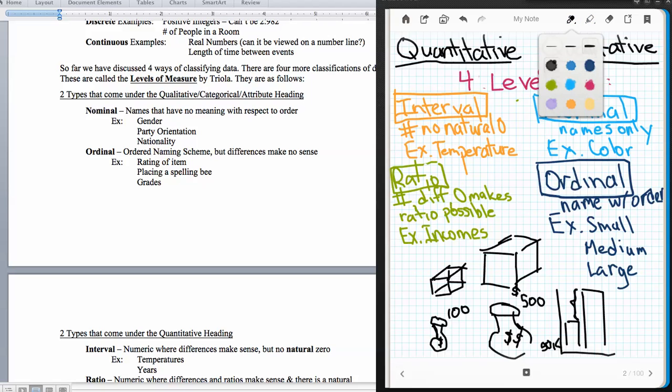Another name for categorical or qualitative is attribute. Once we have the fact that we do have these 4 levels of measure, and these 4 levels can be separated into 2 with the qualitative and 2 with the quantitative, then it's time to talk about those 4 levels of measure. Our first 2, we'll talk about as qualitative, just names only. We have nominal data and we have ordinal data.